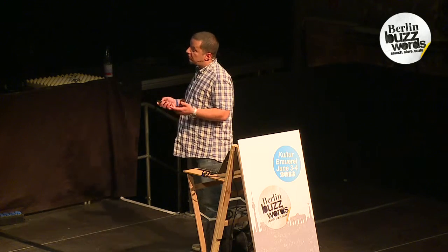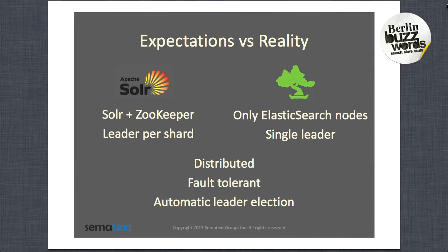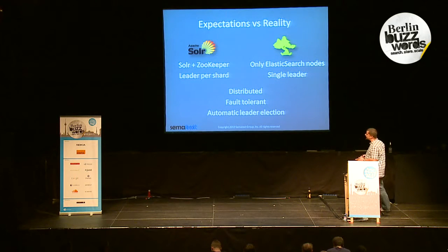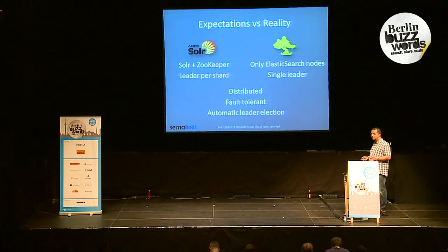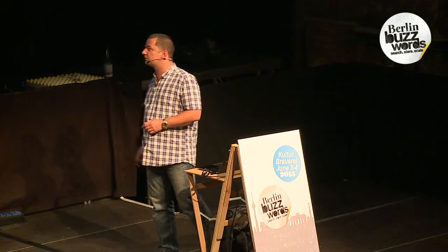If we look at the expectations versus the reality, we'll see that Solr — SolrCloud at least — is working with ZooKeeper to create clusters. It has a leader per shard. On the other side, with Elasticsearch, we have only Elasticsearch nodes. Elasticsearch is able to handle itself, and we have a single leader called master. Both search servers are distributed, fault tolerant, and have automatic leader election.